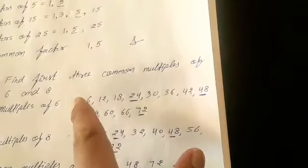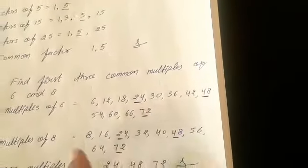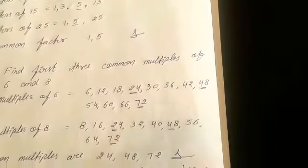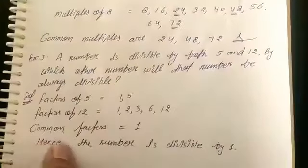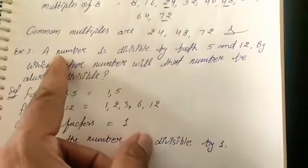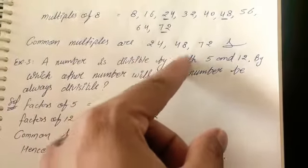So 24, 48, and 72 are the common multiples. Example 3: A number is divisible by both 5 and 12, by which other number will that number be always divisible?